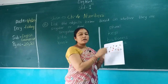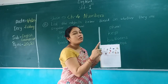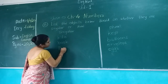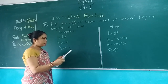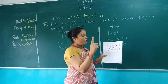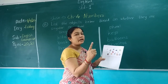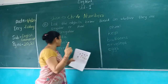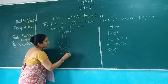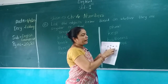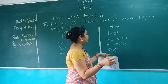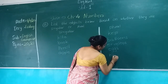How many pencils are here? Only one pencil. So where we write? In the singular column. P-E-N-C-I-L, Pencil. How many apples are here? Only one apple. So we write in the singular column. A-P-P-L-E, Apple. How many hands are here? Two hands. So we write in the plural column: Hands.